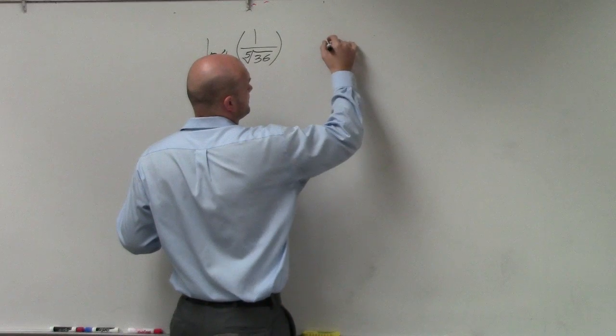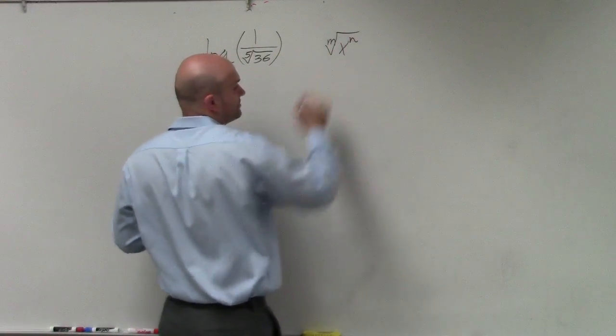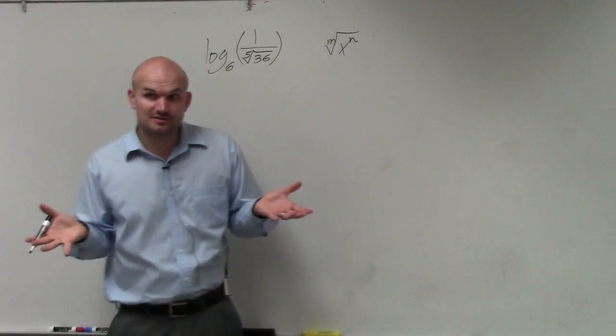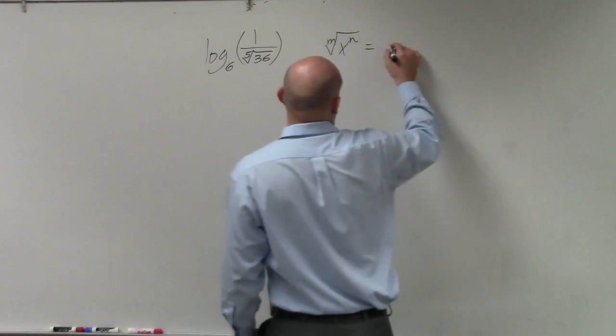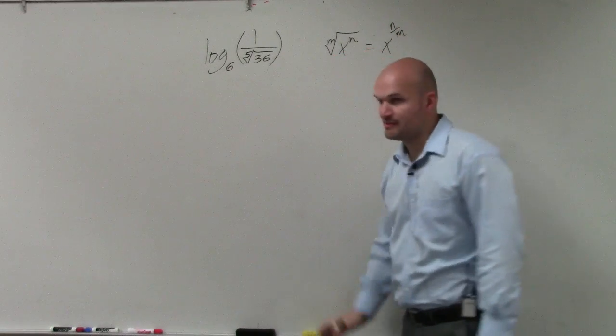First of all, m-th root of x to the n-th power. Anytime we have radicals, we can always rewrite them as rational powers. So that's x to the n over m. Does everybody follow me?